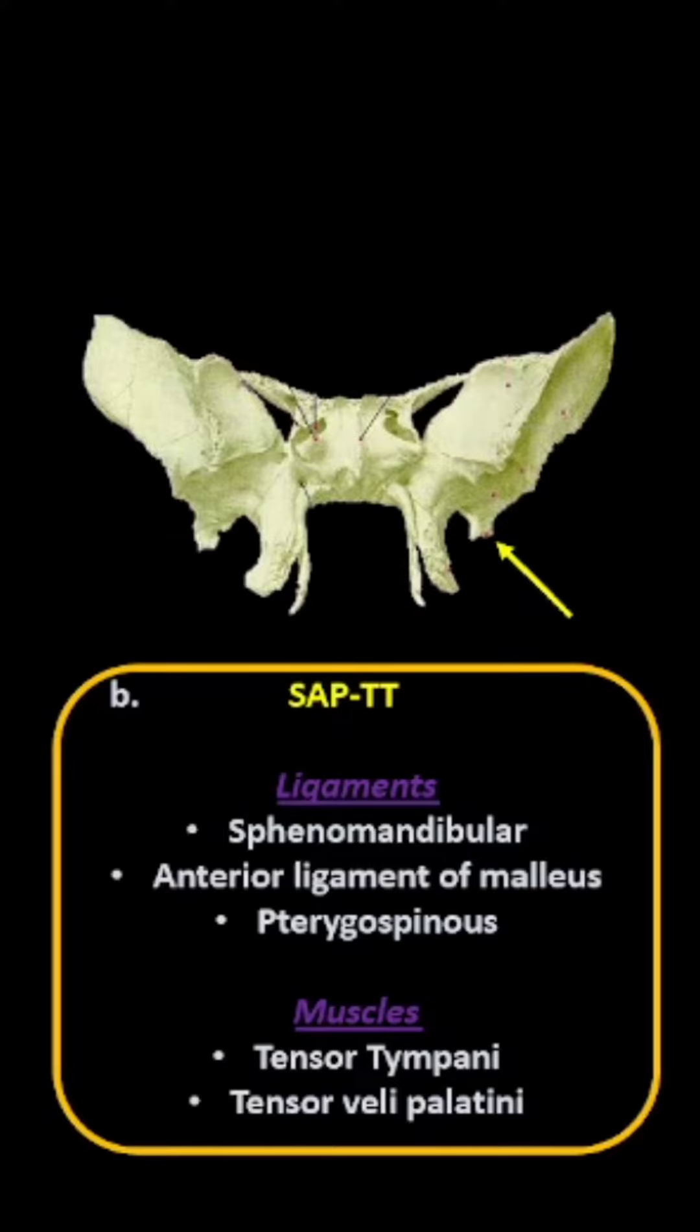They are sphenomandibular ligament, anterior ligament of malleus and pterygospinous ligament. And TT stands for the muscles. TT means tensor tympani and tensor veli palatini muscle. So these are the structures attached to the pointed part.